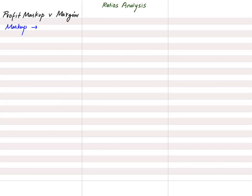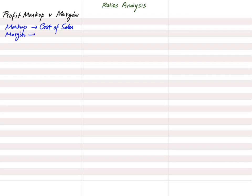Markup means profit calculated as a percentage of cost, or cost of sales. If the cost price of anything is given in the question and we are told to apply a percentage on that cost, the percentage applied on the cost value is known as markup percentage, and what we get by applying this markup percentage is profit, also known as gross profit.